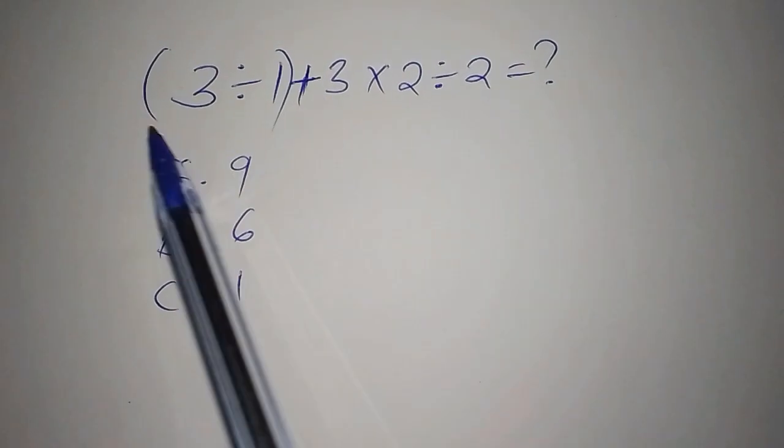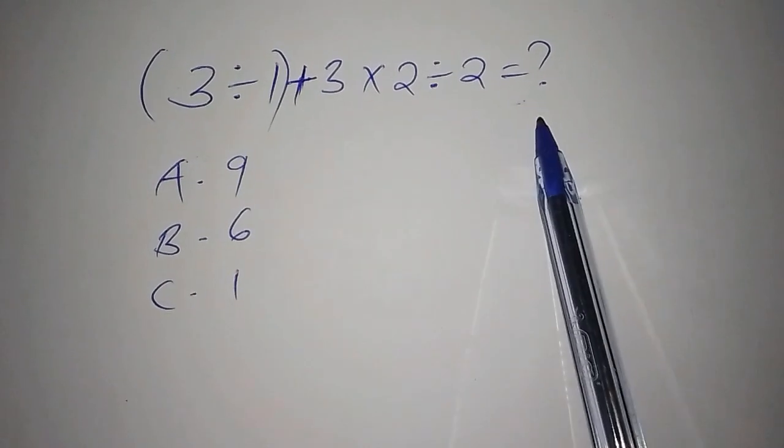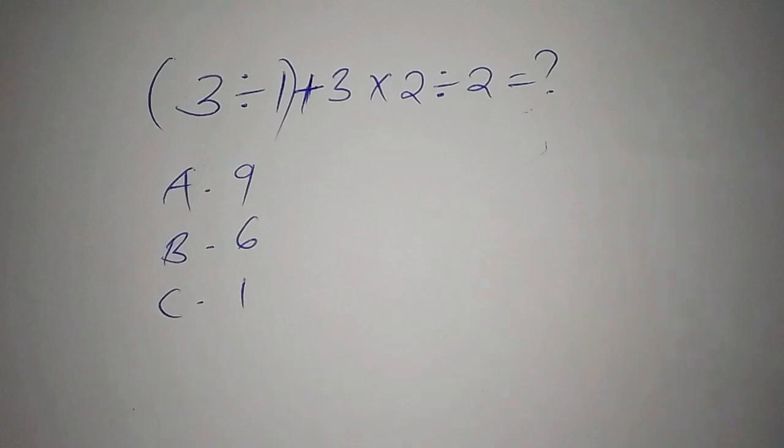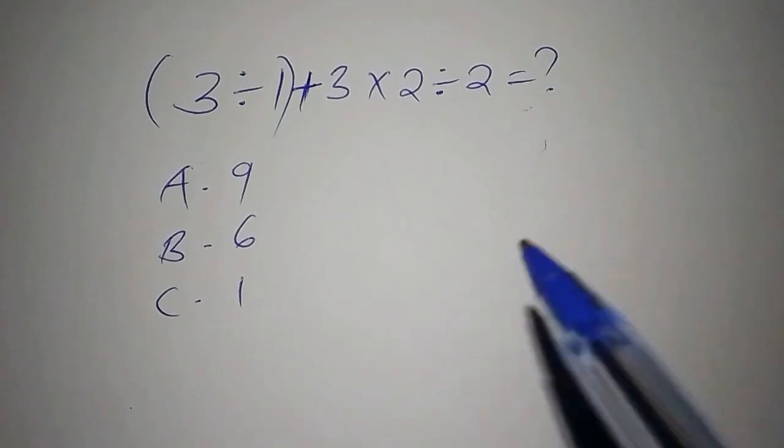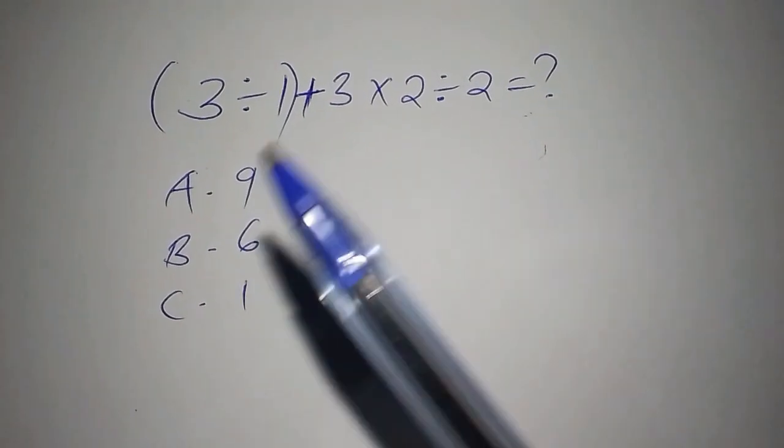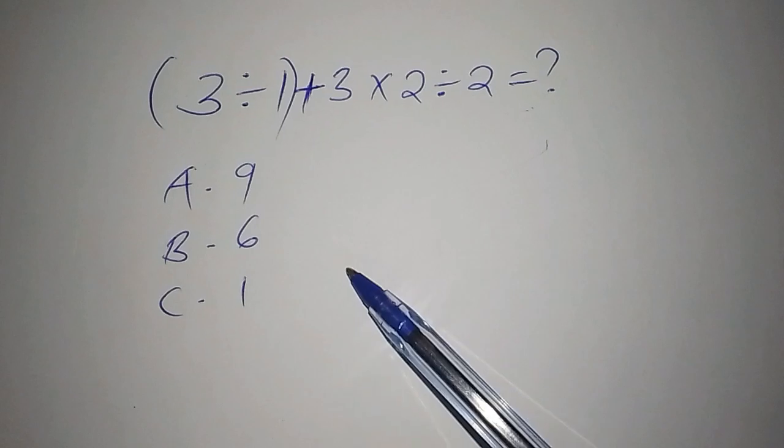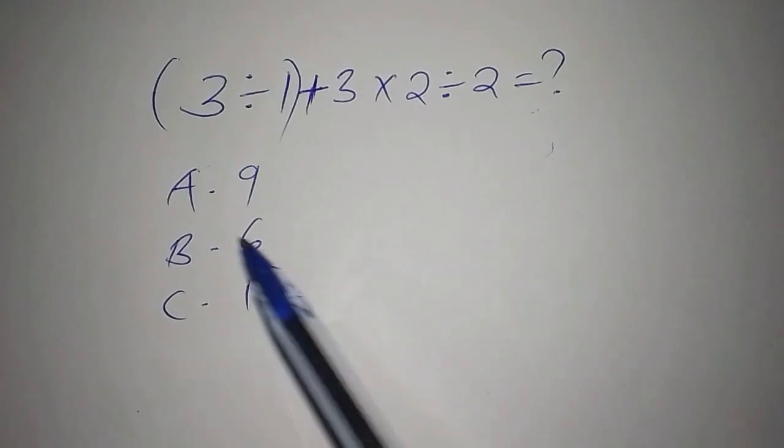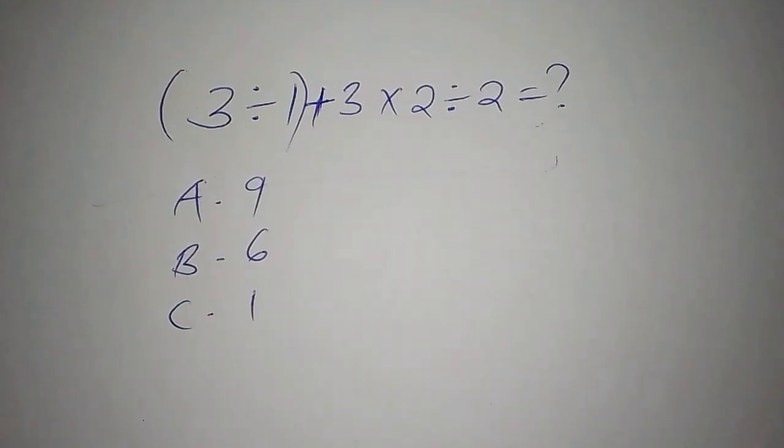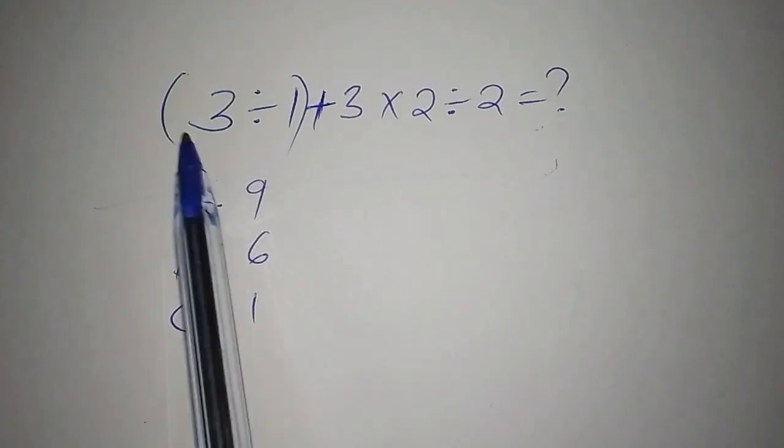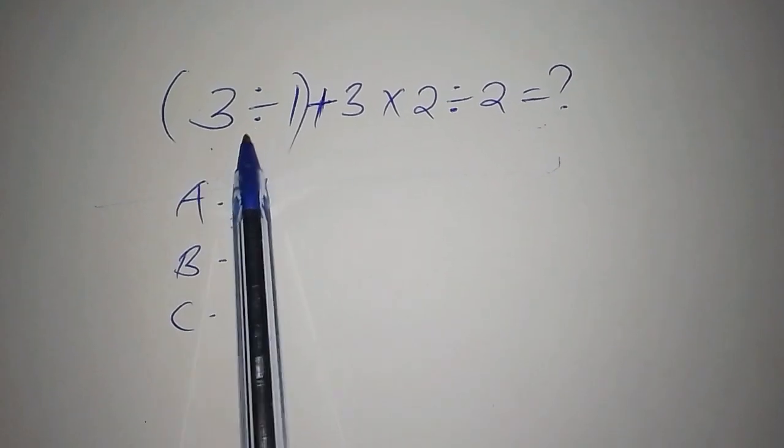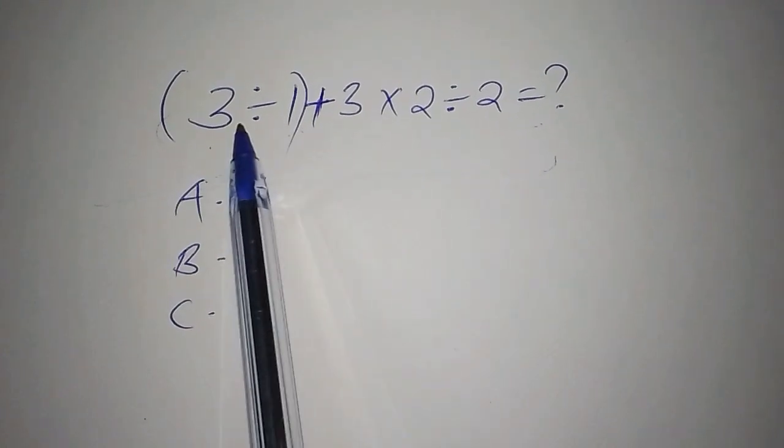90% of people got this math problem wrong and only 10% got it right. If you want to know the reason why, stay with me from the beginning to the end. It was a simple math problem that a lot of people failed. Let's see: we have (3÷1)+3×2÷2=?